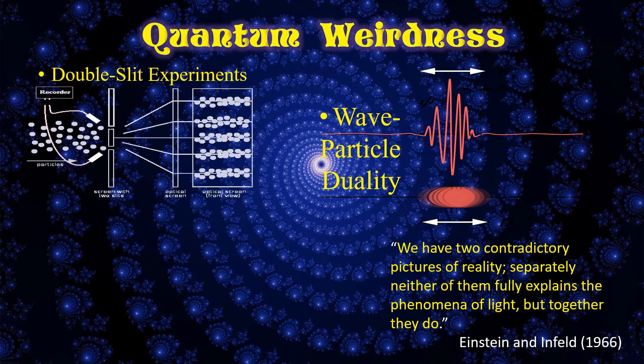The problem is that particles and waves are two contrasting phenomena, so they cannot describe the same thing at the same time. Einstein summarized this problem by saying, we have two contradictory pictures of reality, separately neither of them fully explains the phenomena of light, but together they do.